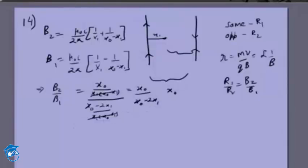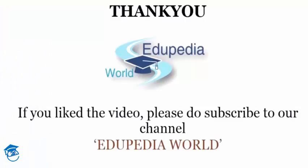We know x0 by x1 is equal to 3, so this becomes 3 divided by (3 minus 2), which is 3 divided by 1, which equals 3. So the answer to question 14 is 3. Thank you.